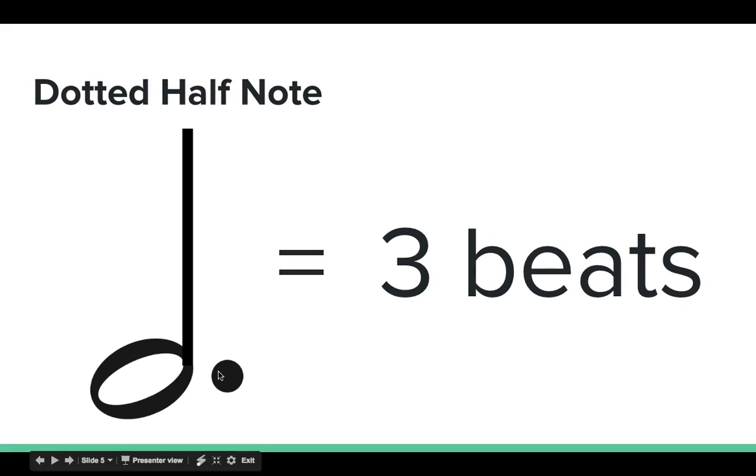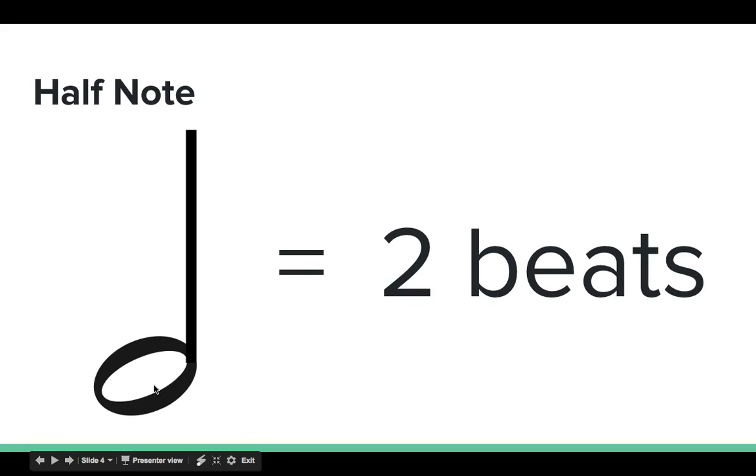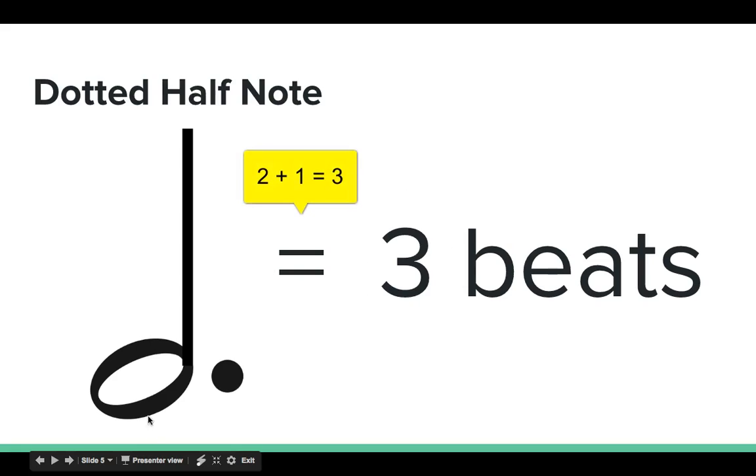Now this note is called a dotted half note. Notice it looks exactly the same as the half note, but we're adding a dot, and what this dot does is it adds half of the value of whatever note it's attached to back to itself. So remember, the half note receives two beats. Well, half of two equals one, so two plus one equals three, the dotted half note. Now, the same thing that I did with the half note, I'm going to sing the dotted half note over the course of the three beats.